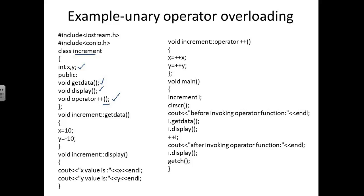If the operator member function has no argument, it is unary operator overloading with a normal operator function. If it has one argument, it uses a friend function. Inside the operator function, x = ++x and y = ++y. In the main program, I create object 'I' for the increment class. I call I.getData() to set x=10 and y=-10, then I.display() to show those values.